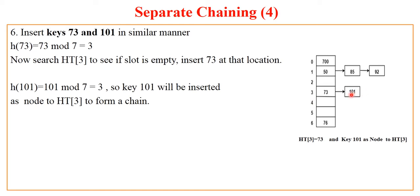There is no slot empty at remainder 3, that is hash address 3. So we will insert 101 as a separate node to hash table index 3. This way we have created a separate chain for all the synonyms of the particular hash address.